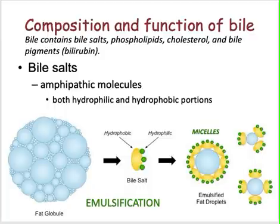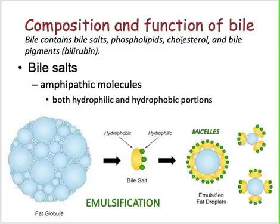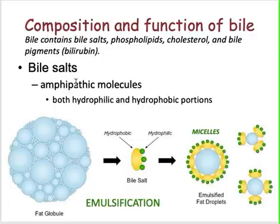Your bile mostly contains bile salts, phospholipids, cholesterol, and bile pigments, or your bilirubin. Bilirubin is a yellowish and greenish pigment that is produced by your liver. Your bile salts, a major component of your bile, are amphipathic molecules.